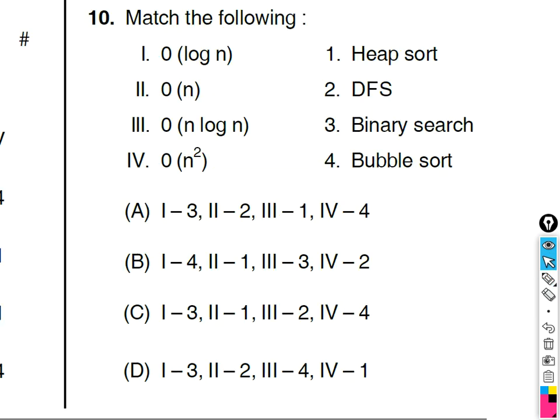Tenth question: match the following algorithm complexities. Heap sort has complexity O(n log n). Depth First Search has complexity O(n). Binary search has complexity O(log n). Bubble sort has complexity O(n²). The answer is A: 1→3, 2→2 (wait, corrected mapping) — heap sort to n log n, DFS to n, binary search to log n, bubble sort to n². Answer is A.